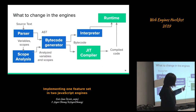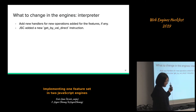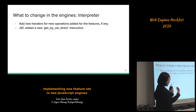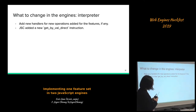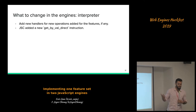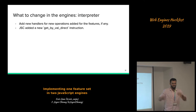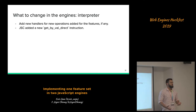After that we also need to modify the interpreter. In some cases there are new operations added, for example for private field access, so we need to add new interpreter handlers. In the case of JavaScriptCore we need to create a new instruction called 'op_get_by_val_direct', which implements the semantics of: if we try to access a private field that is not in the object, instead of returning undefined we throw a TypeError.